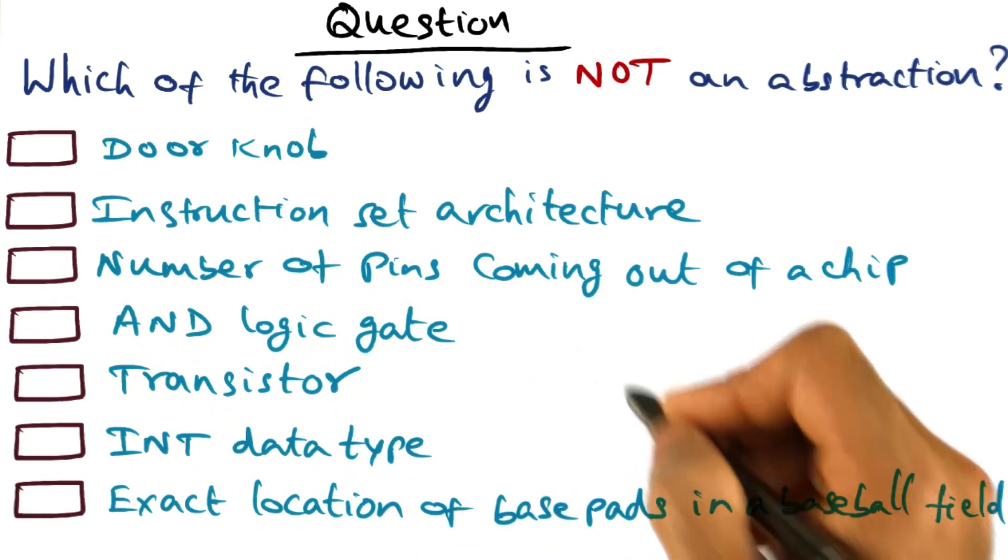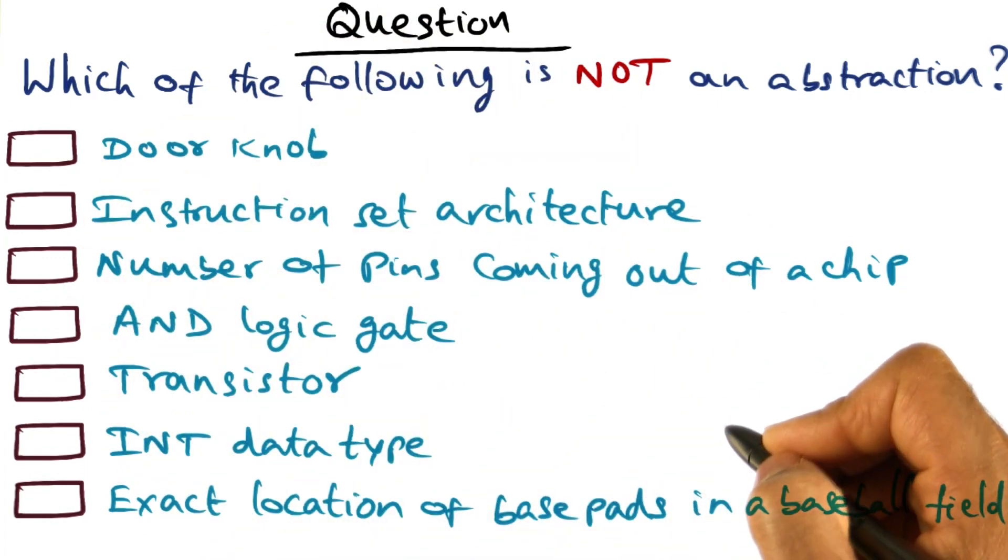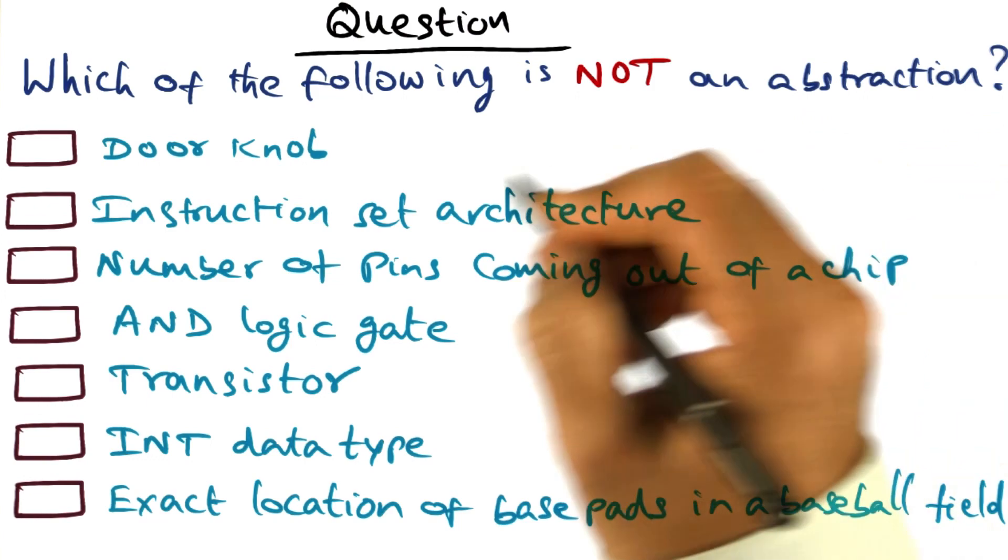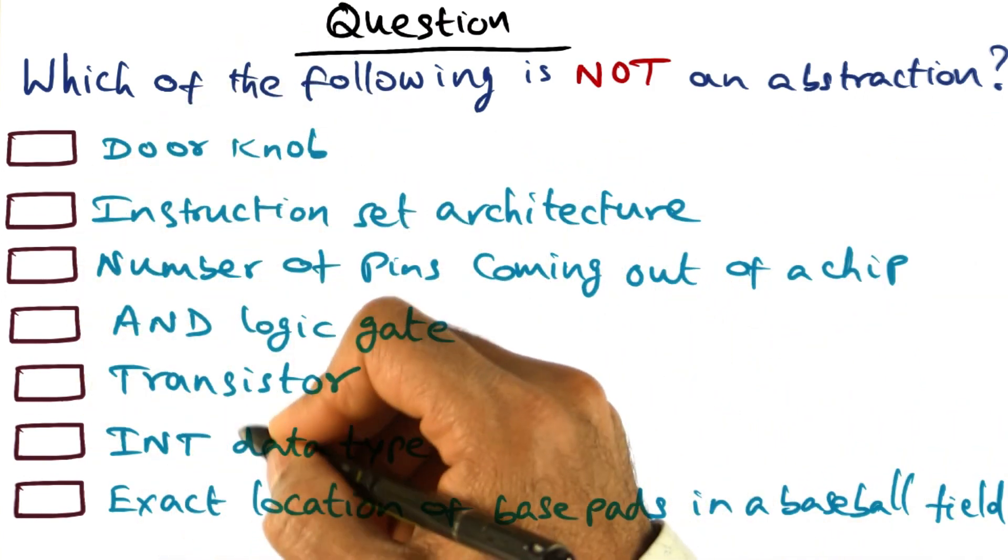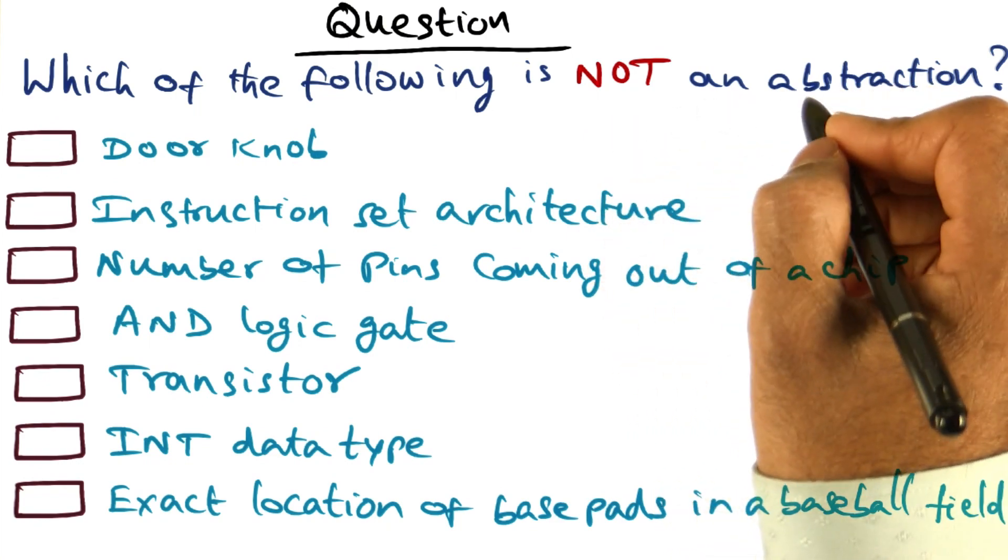There may be more than one item in this set that I've shown you on this panel that may not be an abstraction, and I want you to identify all of the items that you think are not an abstraction.